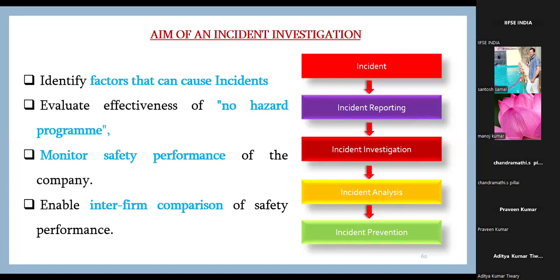Then monitor the safety performance of the company. Each month we prepare HSC reports and annually we also compare with previous years. This enables interfirm comparison of safety performance — if a company manufacturing a similar product has a better safety report than yours, that means some problem exists in your system that you have to identify and rectify.